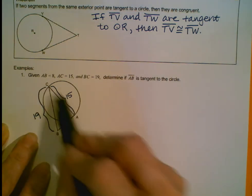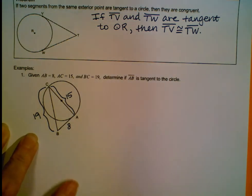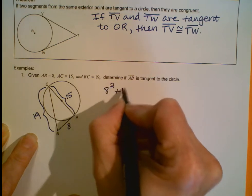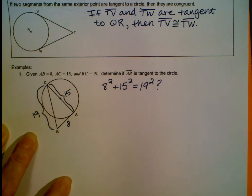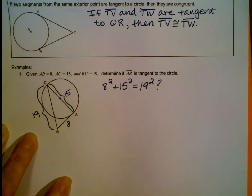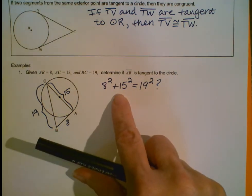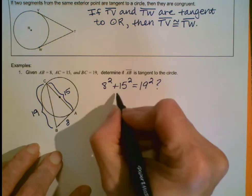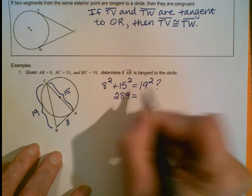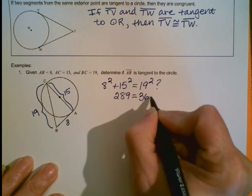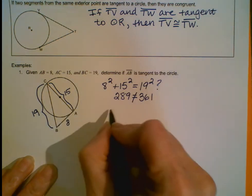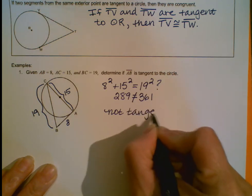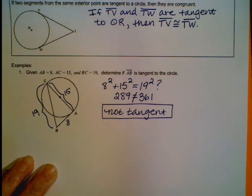If it's a right angle, then this triangle should be a right triangle, which means the Pythagorean theorem should hold. The question becomes: does 8 squared plus 15 squared equal 19 squared? On the left side, 8 squared plus 15 squared gives 289. On the right side, 19 squared is 361. These are clearly not equal, so this cannot be a right angle, which means AB is not tangent.